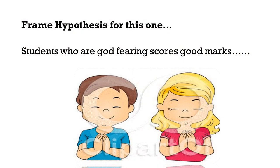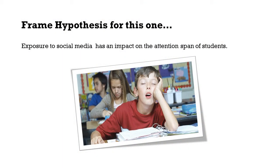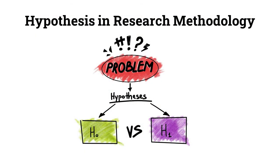Another example: students who are god-fearing score good marks. People who pray a lot — do they get good marks? The null hypothesis is: students who are god-fearing do not score good marks. The alternate hypothesis is: students who are god-fearing score good marks. One more example: exposure to social media has an impact on the attention span of students. The null hypothesis would be: exposure to social media has no impact on the attention span of students. The alternate hypothesis is: exposure to social media has an impact on the attention span of students — and we are trying to prove that it has an impact.